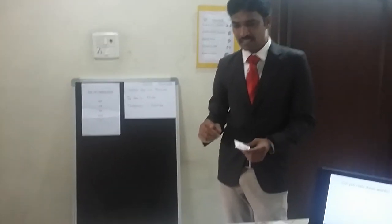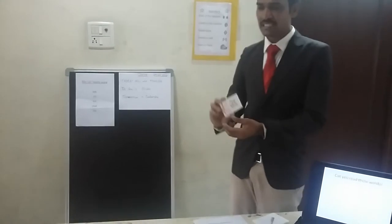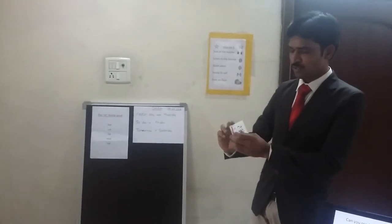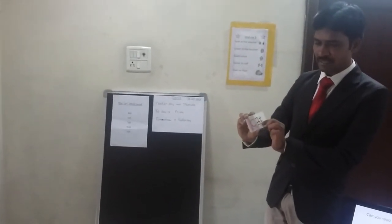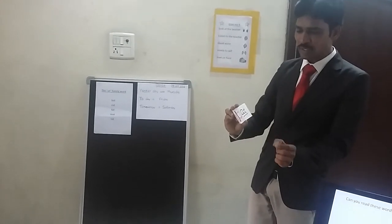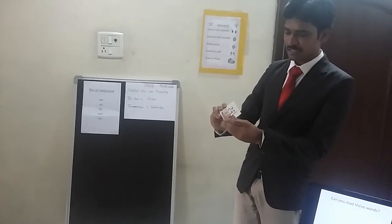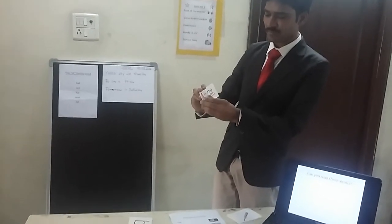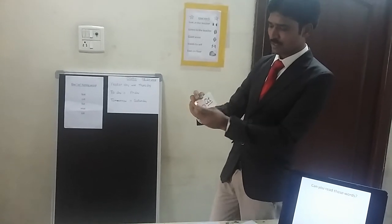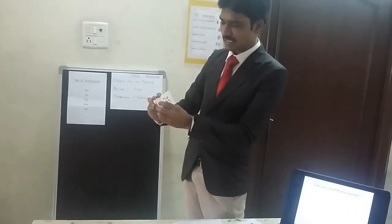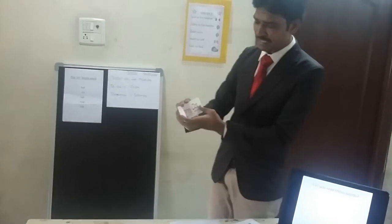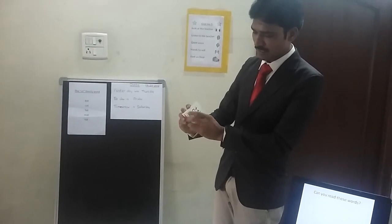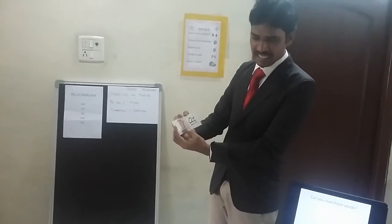Is your activity done? Now one more activity — this is a flip chart. With the help of this flip chart, you can learn these AT family words too. There are letters given here with the AT family. Simply you want to flip the cards: C-A-T, Cat. B-A-T, Bat. M-A-T, Mat. F-A-T, Fat. R-A-T, Rat.